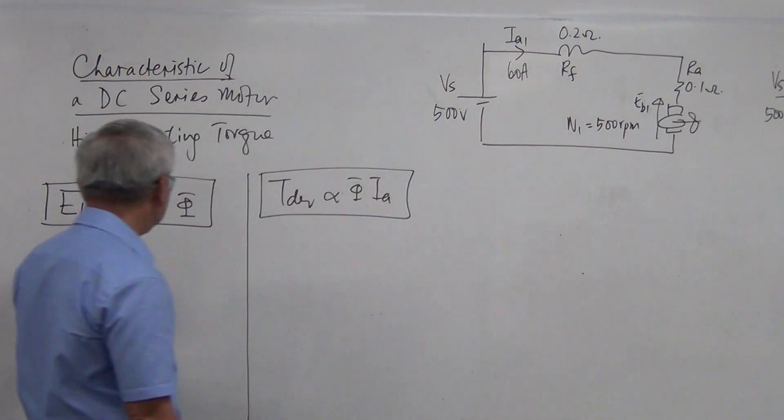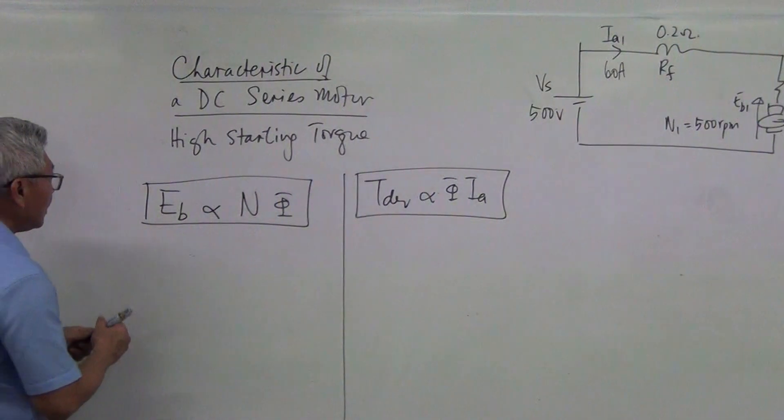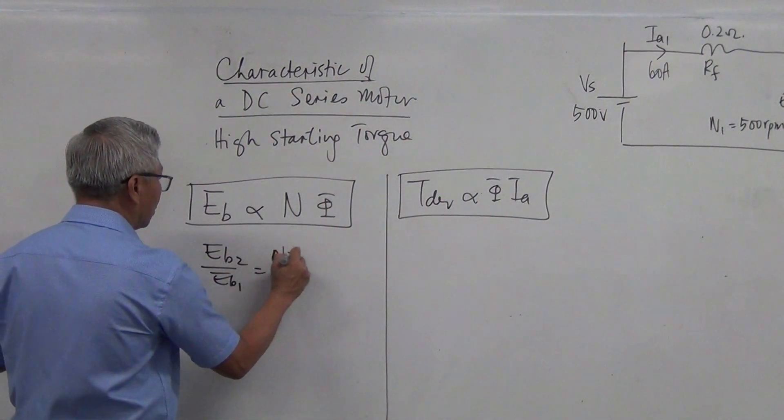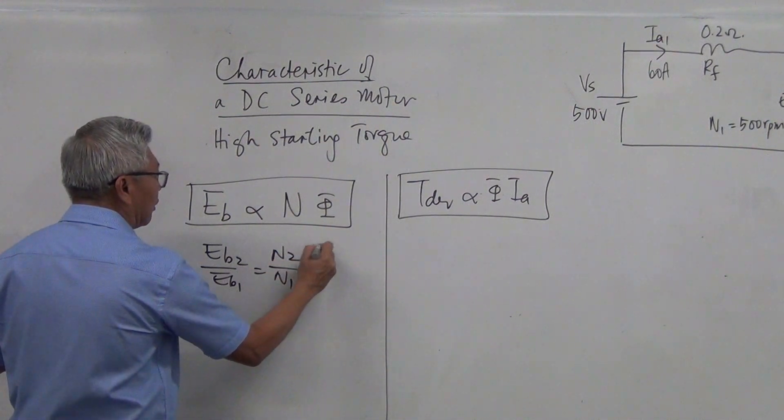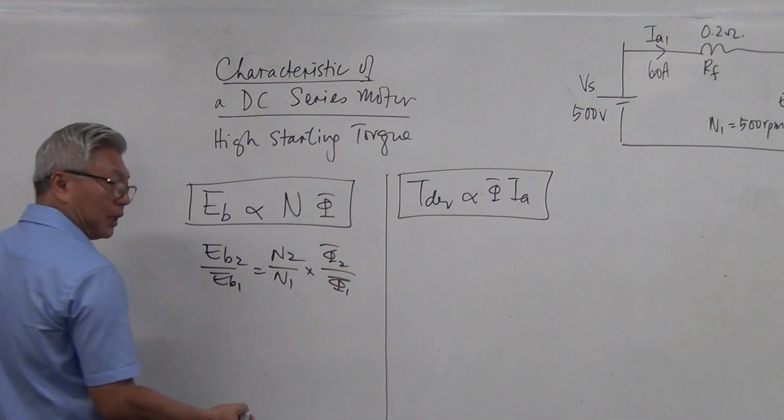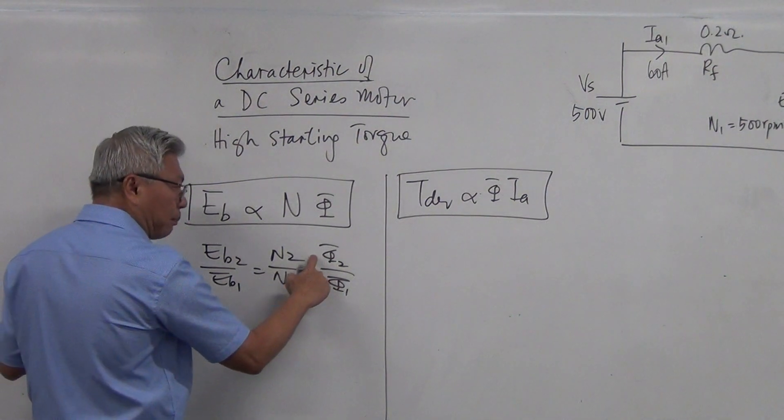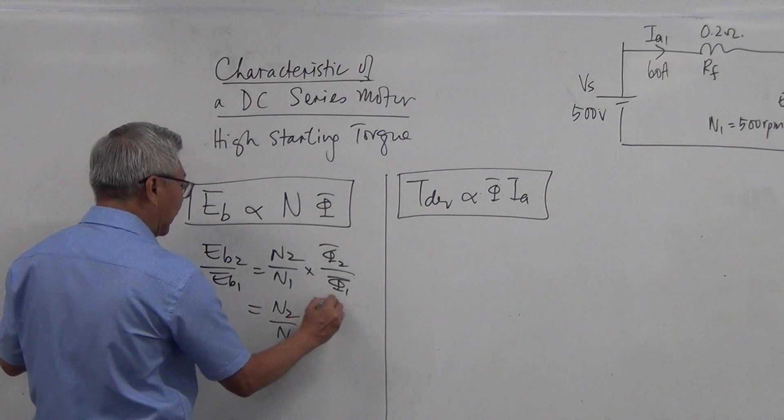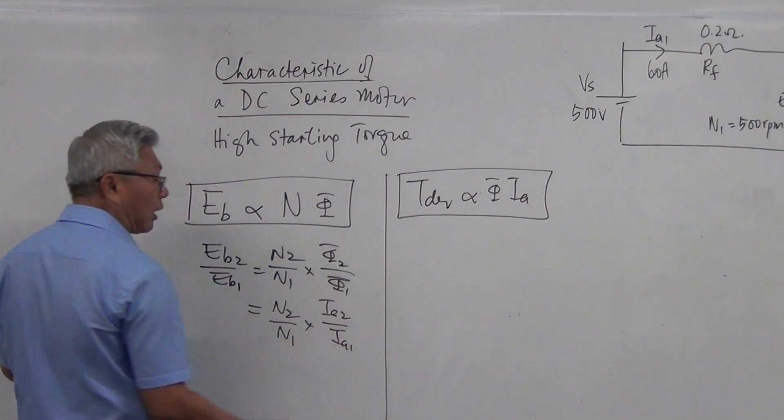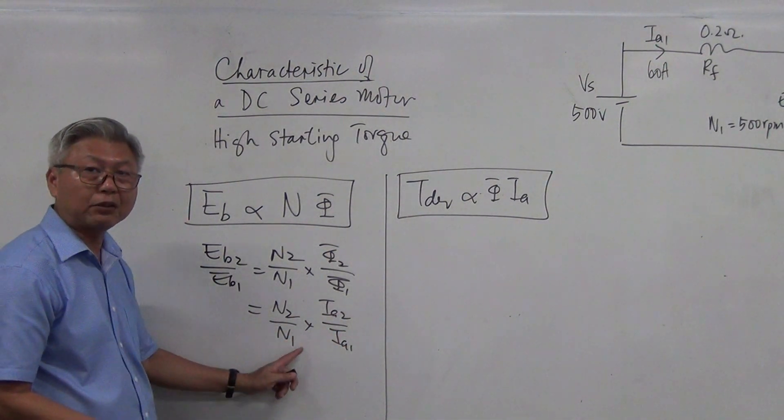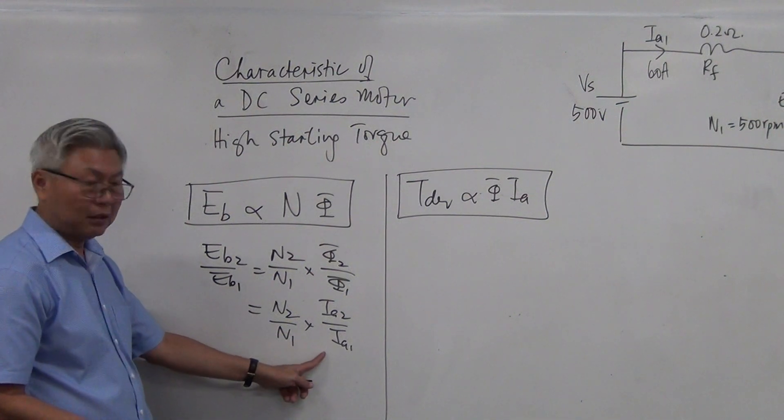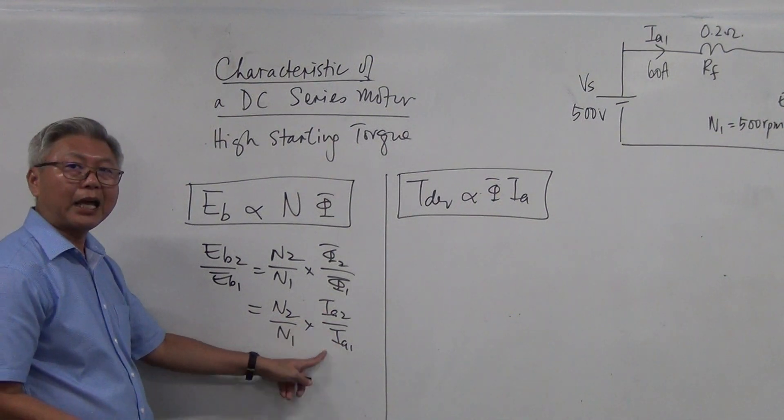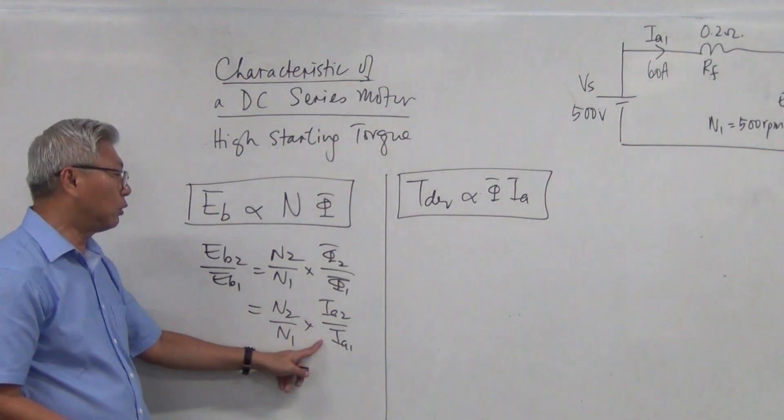Let's look at this relationship again. So EB2 over EB1 equal to N2 over N1 flux 2 over flux 1, right? And should you need to replace the flux with the current, it will now be replaced by IA2 and IA1 because that is the current passing through RF and that is the current that produces the flux. Can you see the difference between the shunt motor? Shunt motor, we replace it with IF, but for series motor, we replace it with IA.